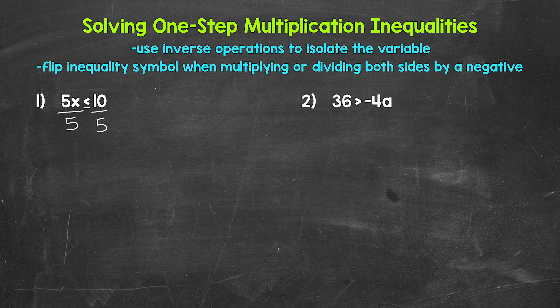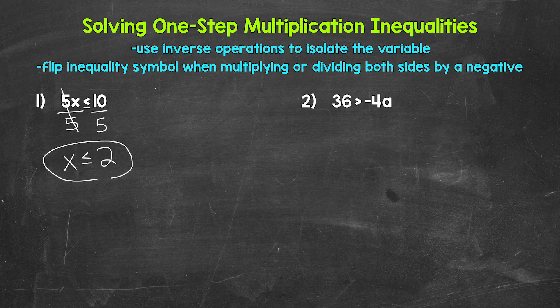On the left side, the 5s cancel each other out and x is now isolated. So we have x is less than or equal to, and then on the right side, 10 divided by 5 gives us 2.